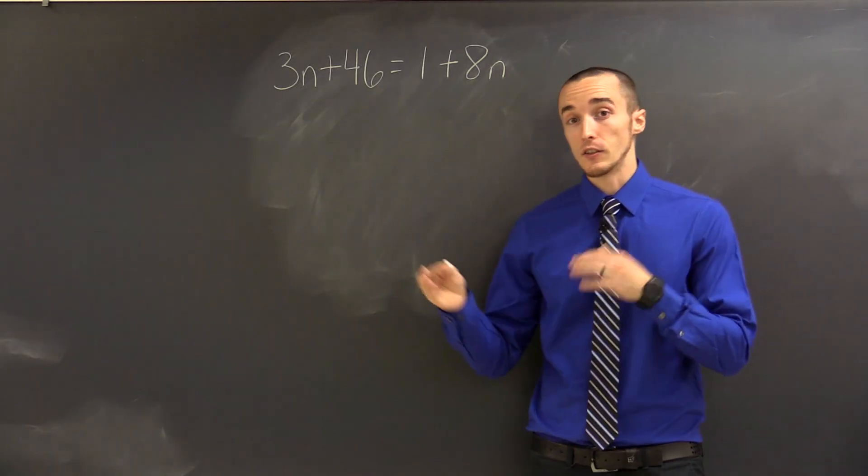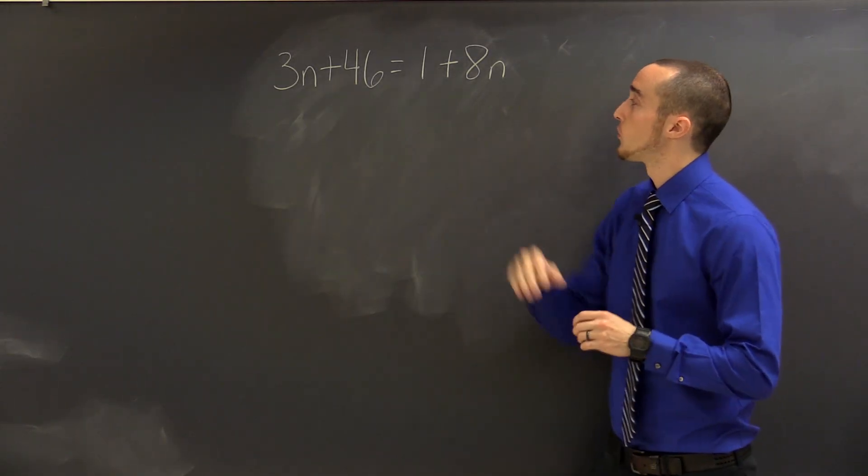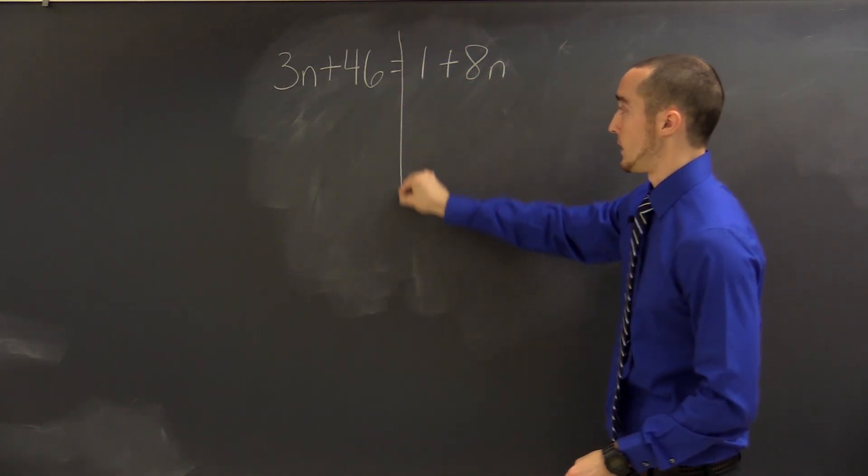Okay, so let's use that same idea to solve a problem that's a little bit trickier. 3n plus 46 equals 1 plus 8n. As always, I like to draw a line down the equal sign.